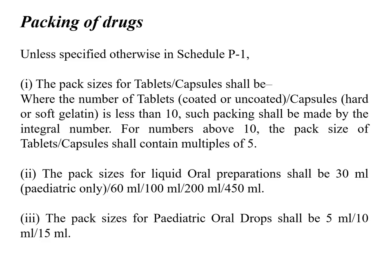Let us see what the section says. Unless specified in Schedule P1, the common rule is that the pack size for tablets or capsules shall be: where the number of tablets (coated or uncoated) or capsules is less than 10, such packing shall be made by integral number — so it could be 4, 7, or 8. For numbers above 10, the pack size of tablets or capsules shall be in multiples of 5.